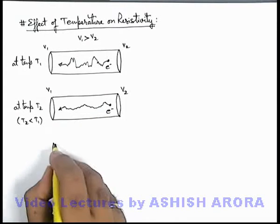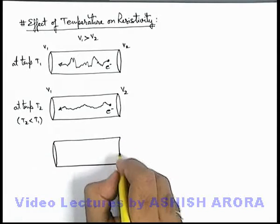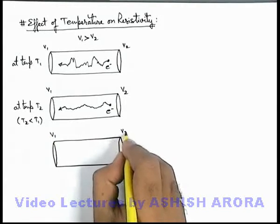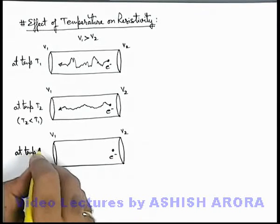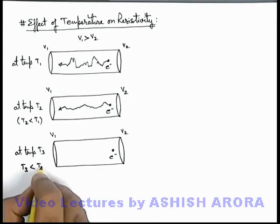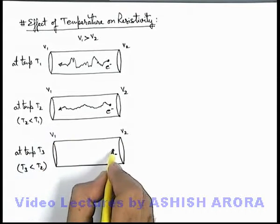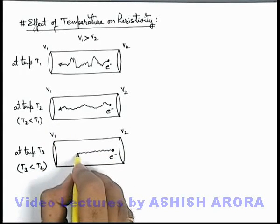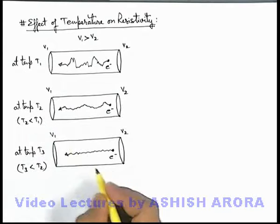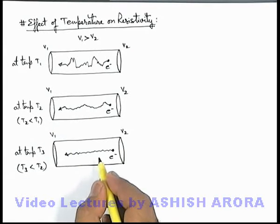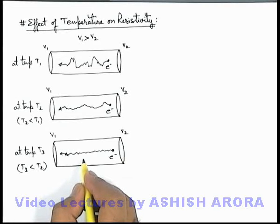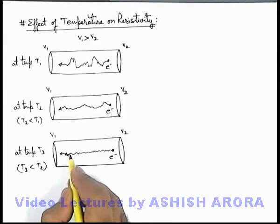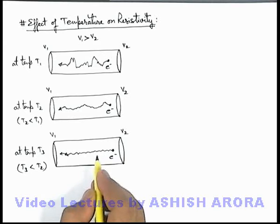If we further decrease the temperature to T3, where T3 is even less than T2, then obviously the electron's motion will be relatively much smoother compared to temperature T2. As temperature decreases, the rate of collision of an electron with its neighbors decreases, and its flow becomes smoother — or we can say its mobility is increasing.